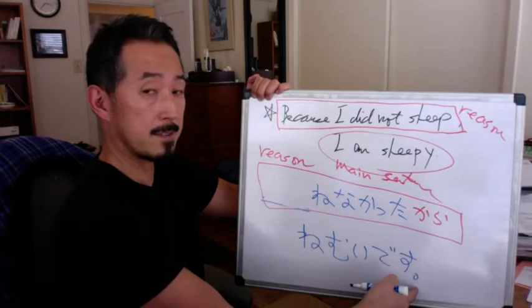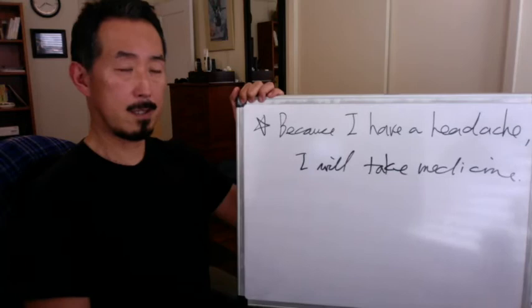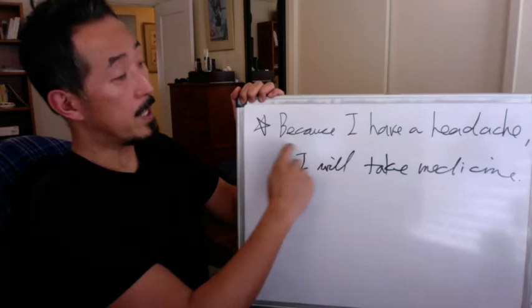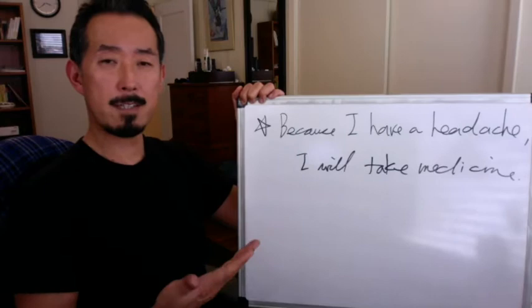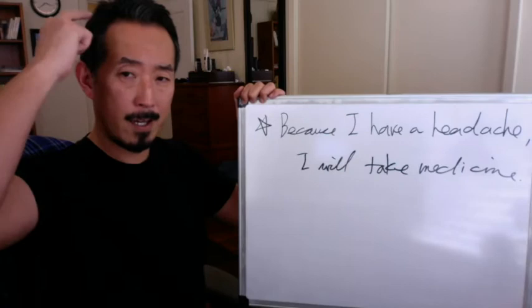So: reason, から, main sentence. That's the structure. Okay, one more example — I hope you are getting used to this sentence structure. Because I have a headache, I will take medicine. What's the reason? The reason is I have a headache. That's the reason why I will take medicine.